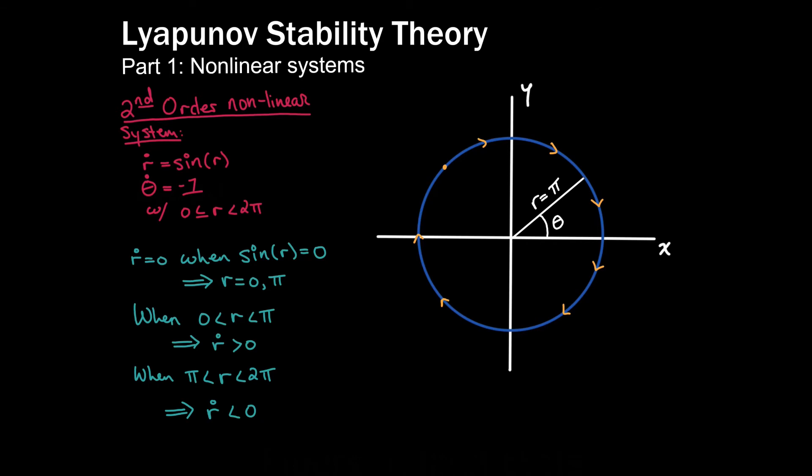Notice that this is not an equilibrium point, but rather kind of a pseudo-equilibrium point. My radius is constant, but my angle is always changing. For the mathematically inclined of you, we would call this set of points in the Cartesian plane with radius pi an invariant set. That is, if I start on this set, I am stuck there for all time. I can never leave it.